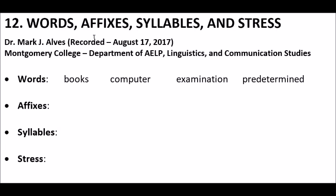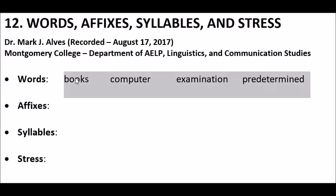To start, a word — what's a definition? Well, it has one or more syllables, and it has its own meaning. That's a simplistic definition; it's a lot more complicated, but for now this is enough. So, here are some words: books, computer, examination, predetermined.